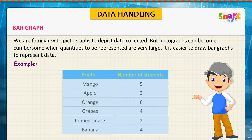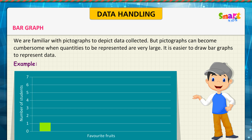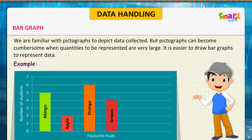Rahul collected the following data about the favorite fruit of children in his class. Represent the following data as a bar chart. Pomegranates liked by 2 students. Bananas liked by 4 students. Look at the bar chart.